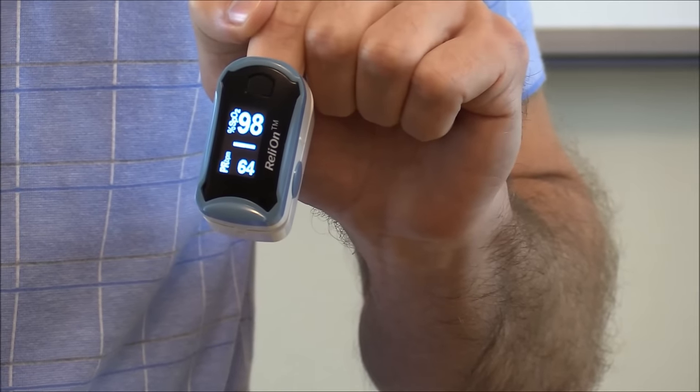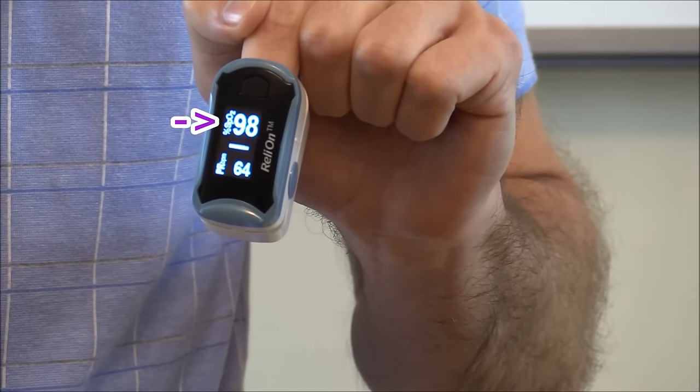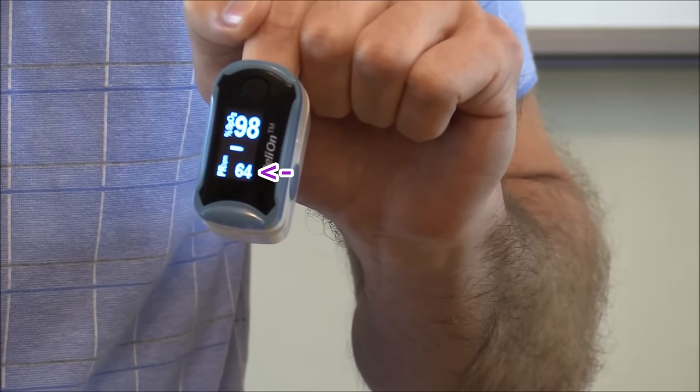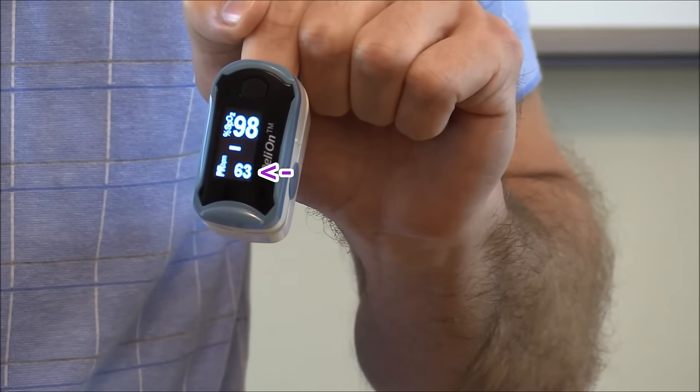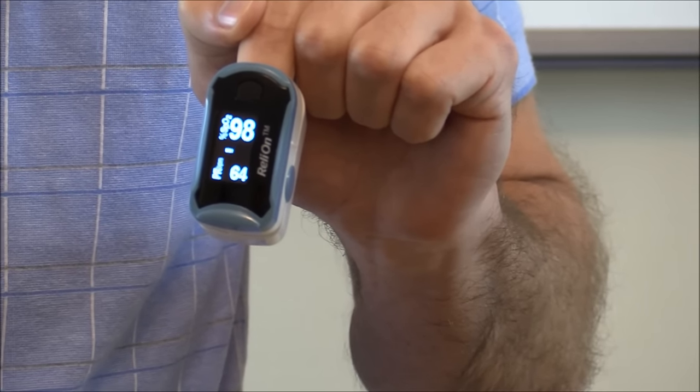Put this on the index finger of the nail bed and then just look for the reading. Here you can see that his oxygen saturation is 98%, that is the reading on the top read as SpO2, and on the bottom you will see his heart rate which is 64 but in a second I'm going to show you how to actually count the heart rate using the radial artery.